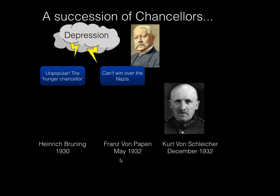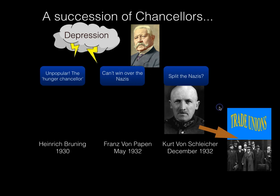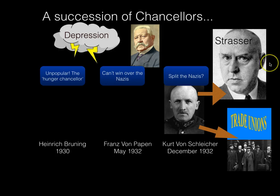Franz von Papen is replaced by Kurt von Schleicher, the next of the Article 48 chancellors. He was an army officer, very much a man behind the scenes whispering in Hindenburg's ear. He has a plan to become chancellor by splitting the Nazi party. Back in 1926 at the Bamberg Conference there was a left-wing part of the Nazi party, and Gregor Strasser was a prominent figure in that left-wing branch. Schleicher planned to get Strasser in as vice-chancellor and hopefully unite left-wing Nazis with the trade unions to get some sort of functioning coalition together.